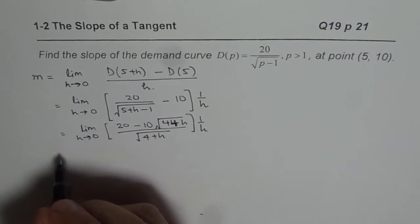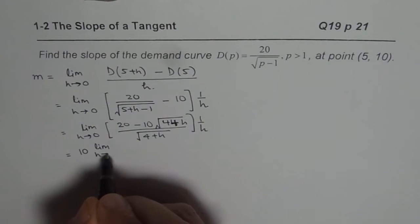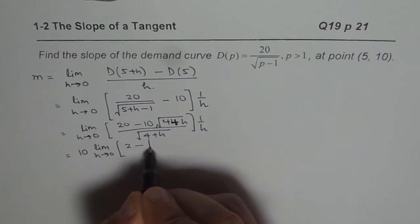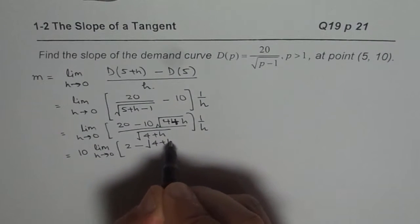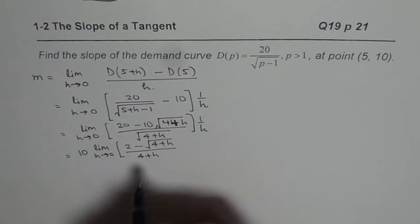Now we can take 10 common here, that is a constant, so we will write 10 outside, limit H approaches 0. And we have 2 minus square root of 4 plus H over square root of 4 plus H.